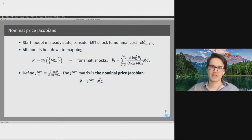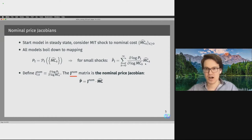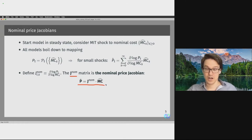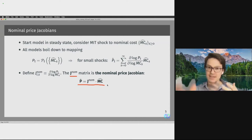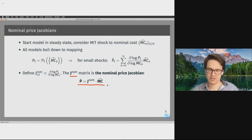By varying the time indices, we get all the entries in this matrix, which we call the nominal price Jacobian J-NOM. Stacking the impulse response of prices into a vector and the nominal marginal cost shock process into a vector, we can write the entire equation in vector form: the vector of the price impulse response equals the nominal price Jacobian times the nominal marginal cost vector. Once I have computed the nominal price Jacobian for a given model — say a menu cost model — I can hit it with arbitrarily shaped nominal marginal cost shocks without resolving the model. In some sense, it's a sufficient statistic for the behavior of the pricing model.